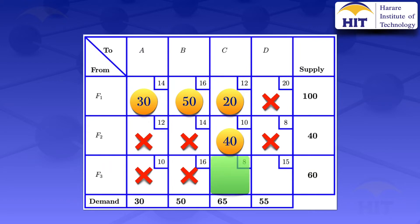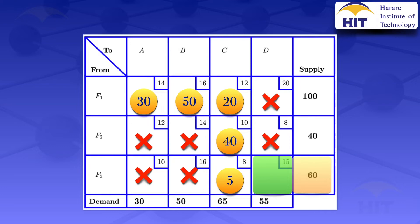We move to cell F3→C. The supply is 60 and the remaining demand for C is 65 minus 40 minus 20, which is 5. The minimum of 5 and 60 is 5, so we allocate 5 units there. We are now left with one unallocated cell, F3→D. The remaining supply for F3 is 60 minus 5, which is 55, and the demand for D is also 55, so we allocate 55 units in that cell.